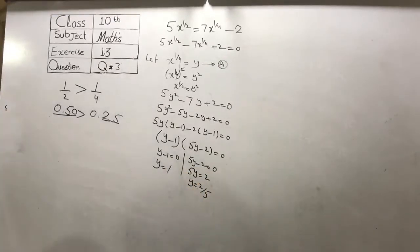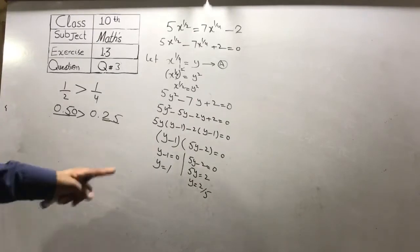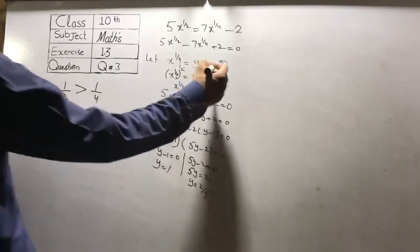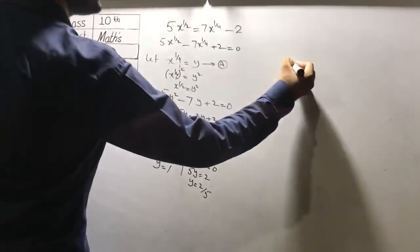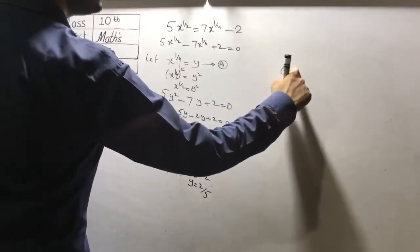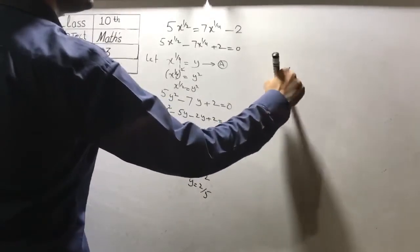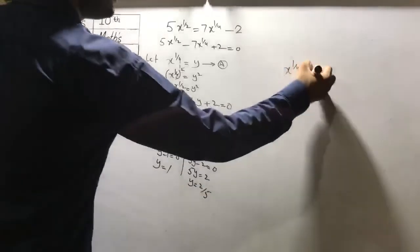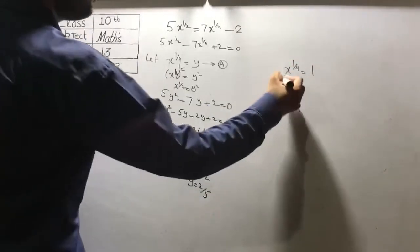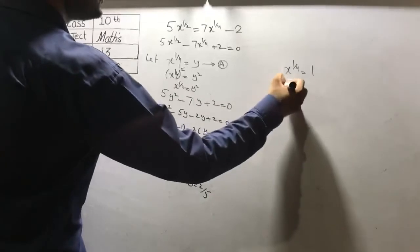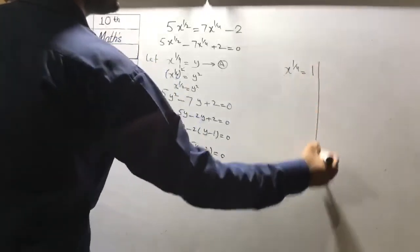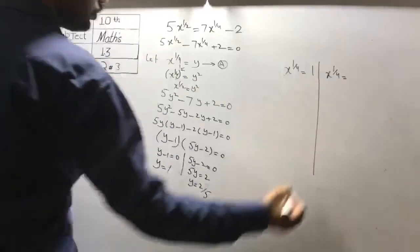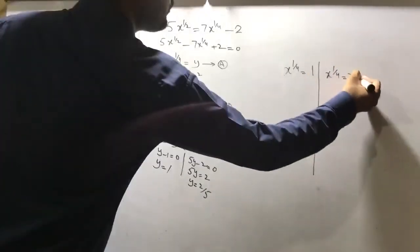Now we get two values of y. We put these values in the equation: since x raised to power 1 over 4 is equal to y, for y equal to 1 it is equal to 1. For the second value, x raised to power 1 over 4 is equal to 2 over 5.